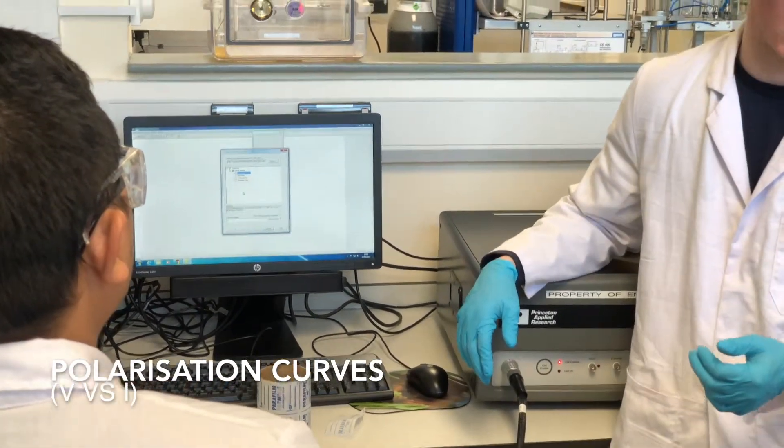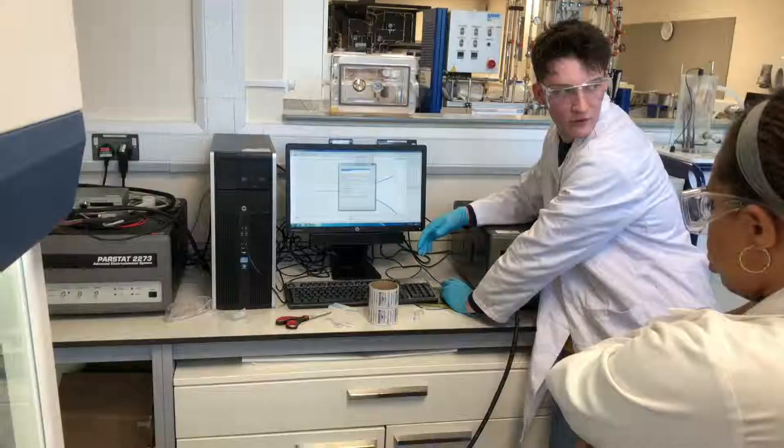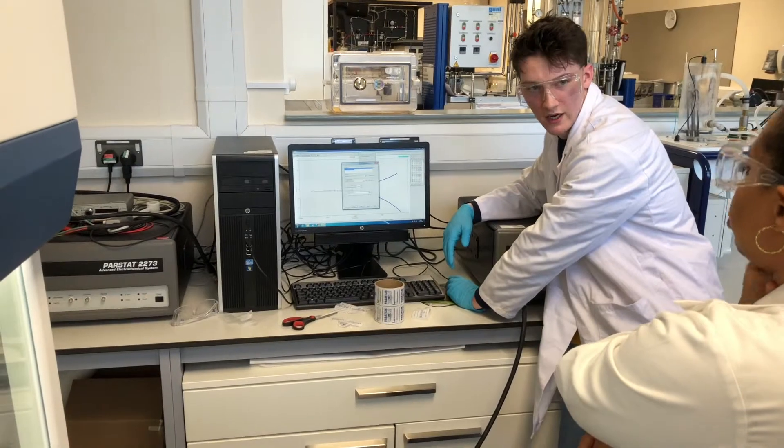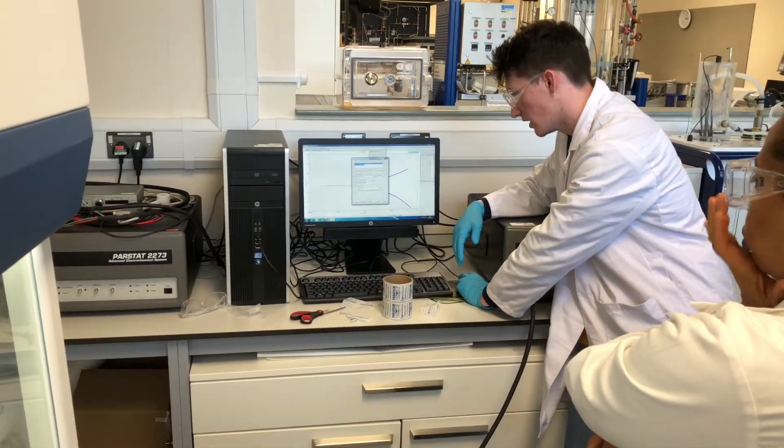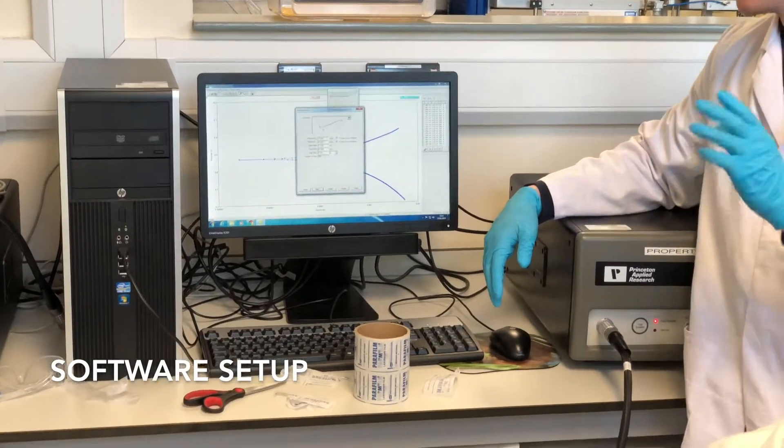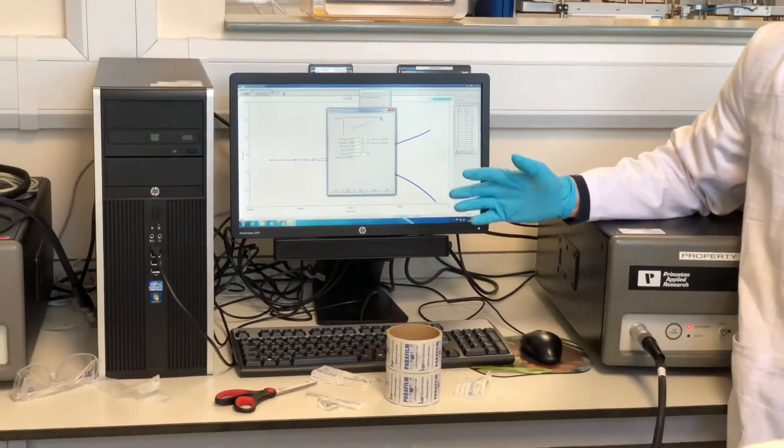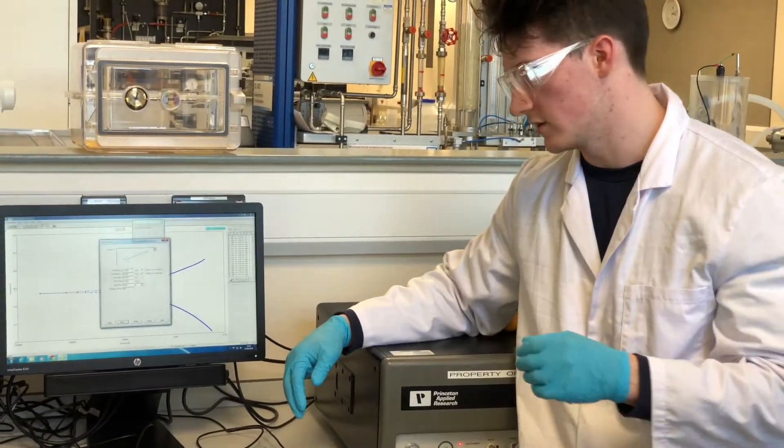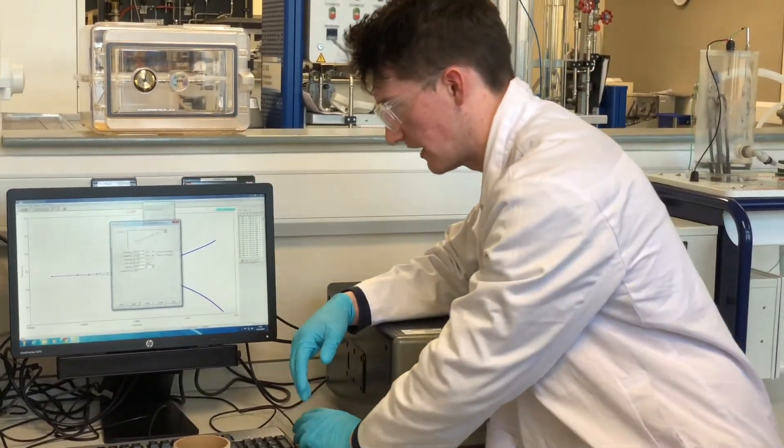So what we're going to do is we're going to make up a polarization curve. This is the area because of course we're putting it into a current density so we need an area as well. So the actual scan definition, this is saying where we're going to start the scan, where we're going to finish the scan, and what are the incremental steps that are going to be used for the scan as well. So this is all to do with potential.